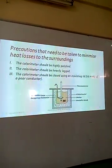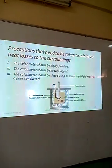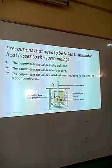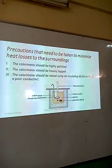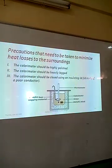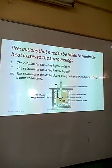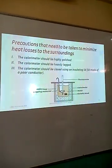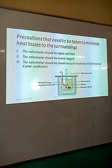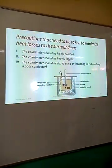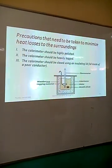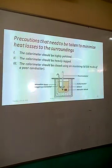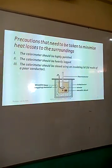In the mixtures method, specific precautions must be taken to minimize heat loss, since a major assumption is that there is negligible heat loss to the surroundings. To minimize heat loss: first, ensure that the calorimeter is highly polished, as a polished surface is a poor absorber and poor emitter, minimizing radiation losses. Second, the calorimeter should be heavily lagged — that is, insulating material placed around it — to minimize heat loss through conduction. Third, the calorimeter should be closed using an insulating lid made of a poor conductor, to minimize heat loss through convection or evaporation.